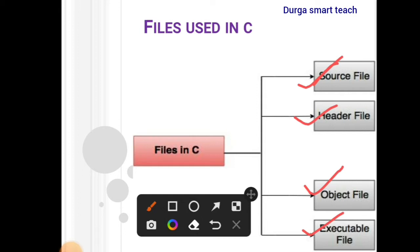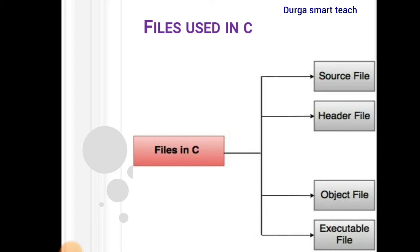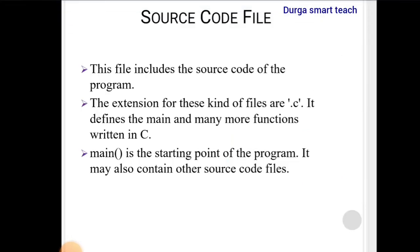A header file, as I already told in the last class, is nothing but preprocessor directives. An object file is created whenever you compile — that is nothing but the object file. The output file is known as the executable file. Let's see them one by one.